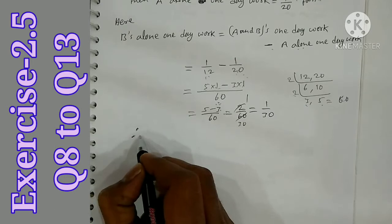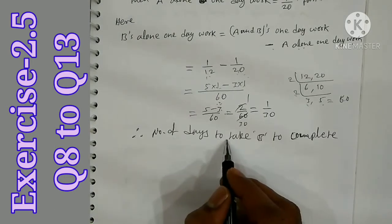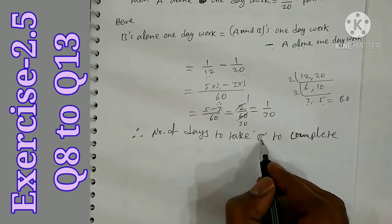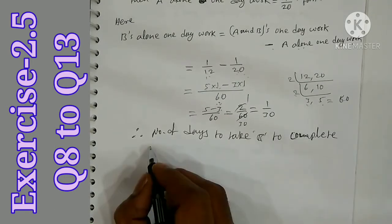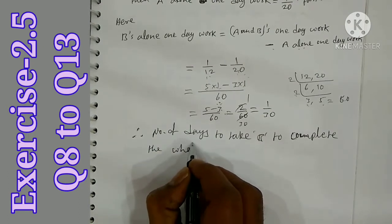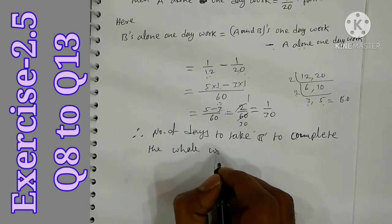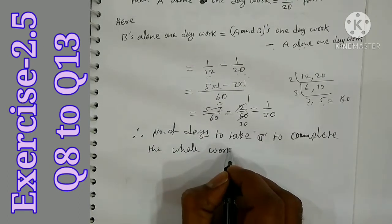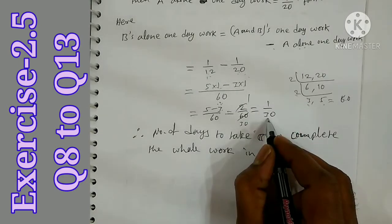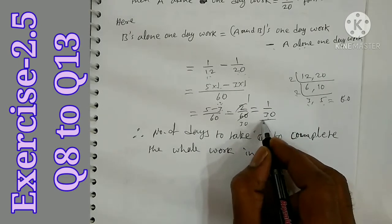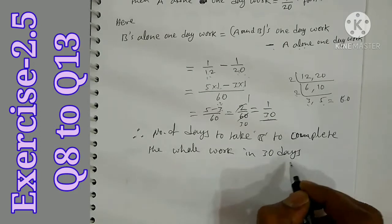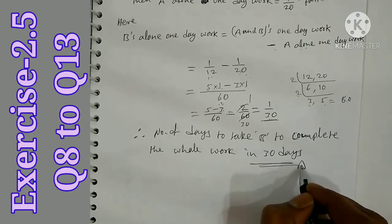Therefore, B's 1 day work is 1 by 30. This means B alone takes 30 days to complete the whole work.